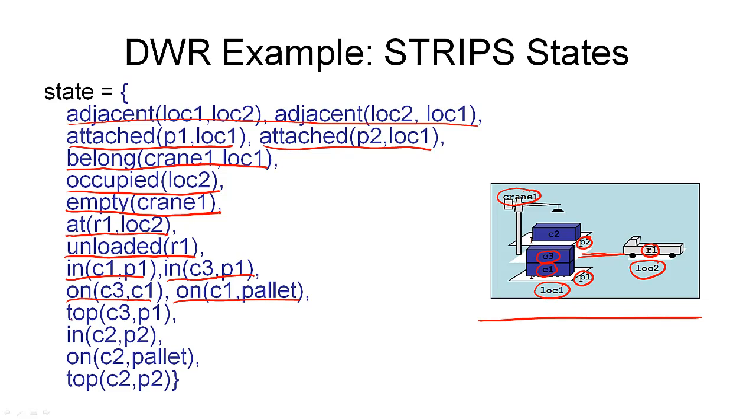The top of the pile is the container C3, which defines this pile at location one, and that is pile one. The second pile only contains one container, C2, and that container is in the pile P2, and it is immediately on the pallet, and also constitutes the top of this pile.